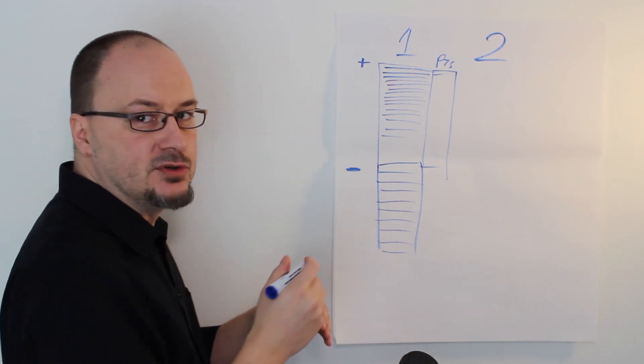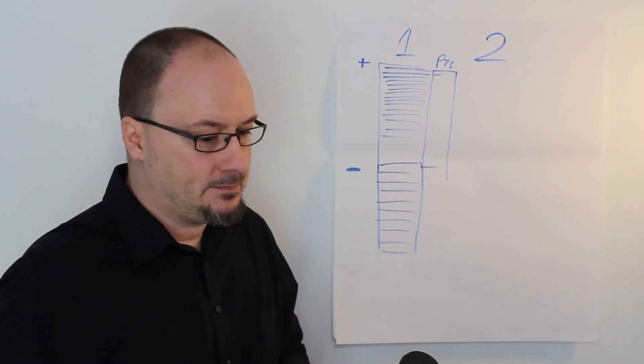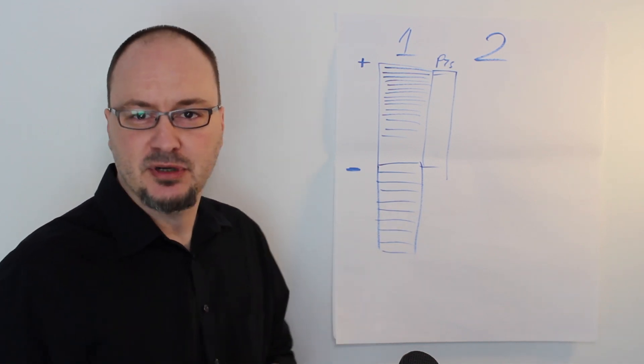So the scale that I'm using is the same as the planning poker and other things like that. It's the modified Fibonacci scale.